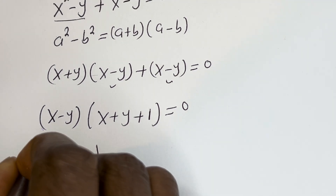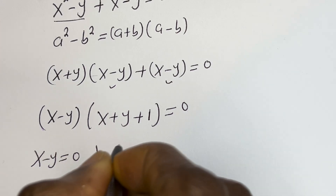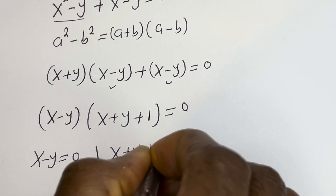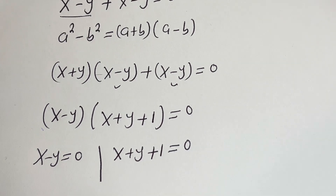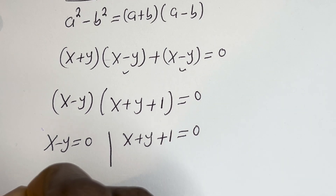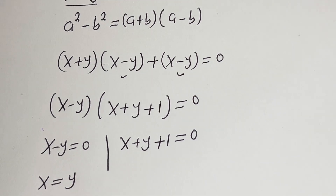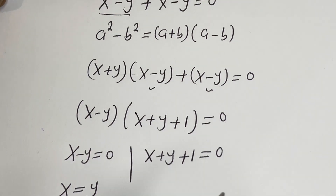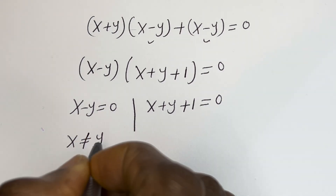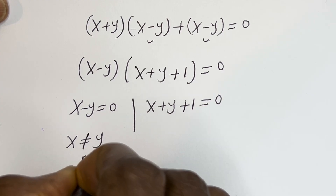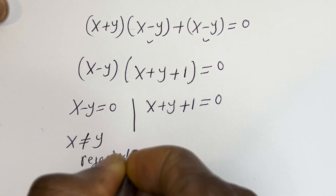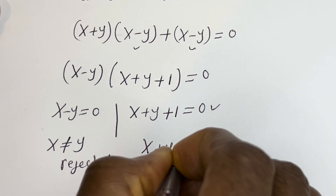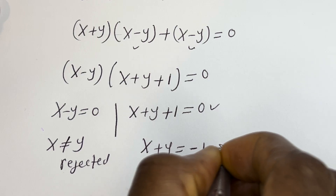There are two cases. The first case is s minus y is equal to 0, and the second case is s plus y plus 1 is equal to 0. From the first case, s equals y — but we know s is not equal to y, so this case is rejected. From the second case, s plus y is equal to minus 1. Let's call this equation 3.